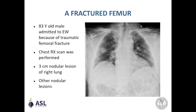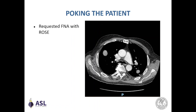An 83-year-old male was admitted to the emergency ward because of a traumatic femoral fracture. A chest X-ray scan was taken as part of a general examination. This X-ray showed a 3 cm nodular lesion in the right lung field and four other smaller nodular lesions in the left lung field. Before admitting him to the operating theater, the surgeons requested a fine needle aspiration with a rapid on-site evaluation of the biggest lesion to understand if it was a malignancy. If it was, then the fracture might be pathological and so the operation would have changed.